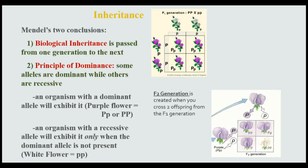The data Mendel collected across the different generations in terms of flower color was enough to help him make two conclusions. The first conclusion is biological inheritance — when genes are passed from one generation to the next. We looked at the white and purple flowers and saw how they were passed from parents to offspring within the parental, F1, and F2 generations. The next conclusion he was able to make is the principle of dominance.